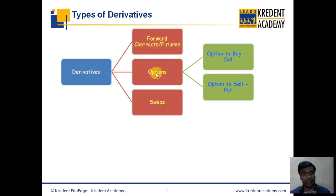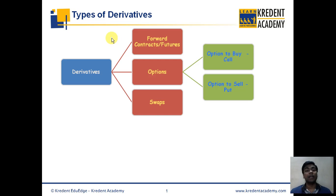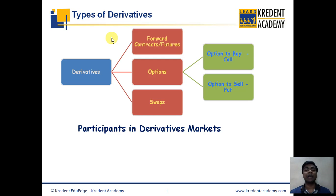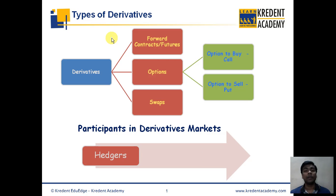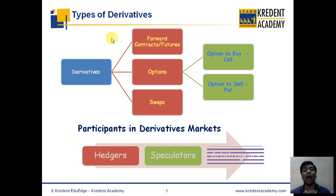Now that we recognize the types of derivatives in financial markets, let us also understand the participants in a derivatives market — who they are, what their purpose is, and what their objective is in trading derivatives. The participants in a derivatives market can be broadly classified under three categories: hedgers, speculators, and arbitrageurs.